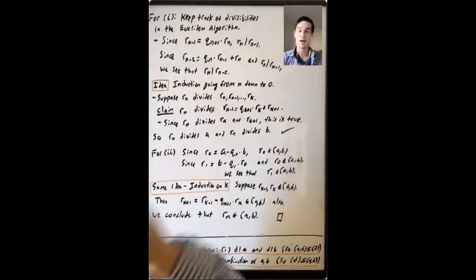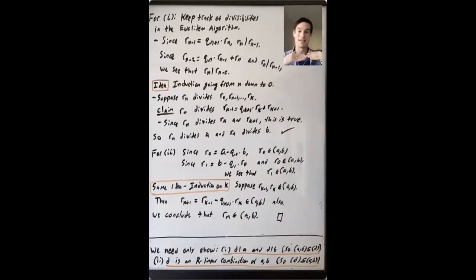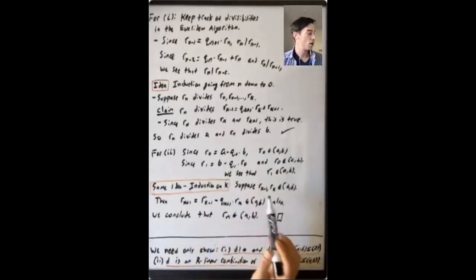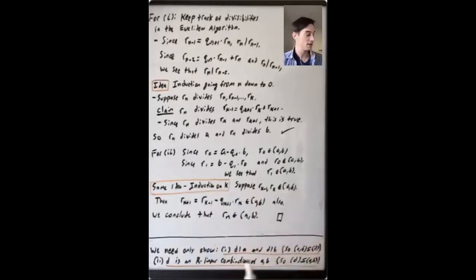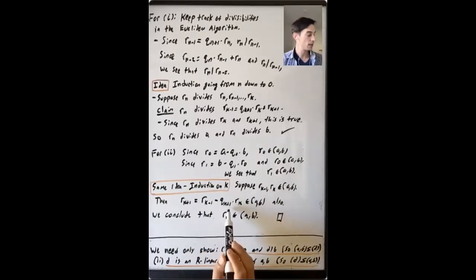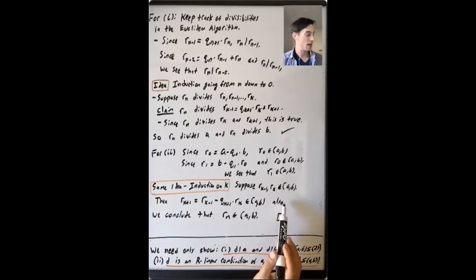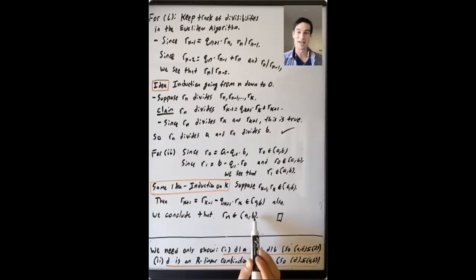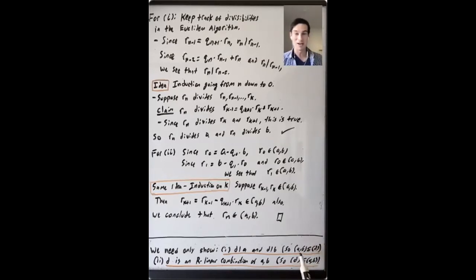It's the same idea, but now going from the top down to the bottom. We do induction on k: suppose R_{k-1} and R_k are in the ideal generated by A and B. Then R_{k+1} equals R_{k-1} minus Q_{k+1} times R_k, which is also in that ideal. Going all the way down, we conclude R_n is in the ideal generated by A and B. Combining both observations, the ideal generated by R_n equals the ideal generated by A and B, which is principal. So R_n is a generator — a GCD of A and B. The proof is complete.